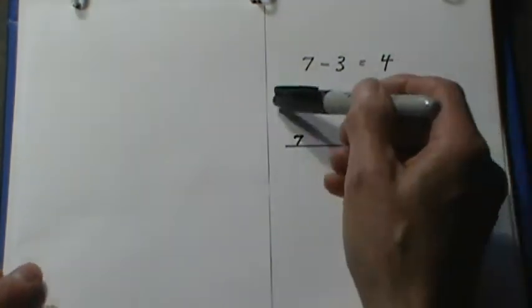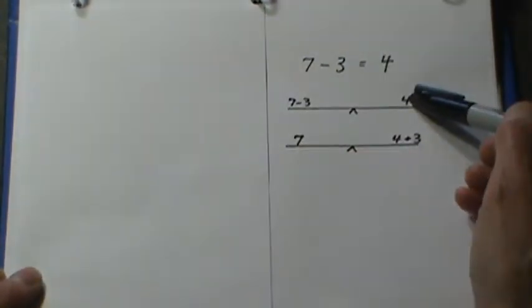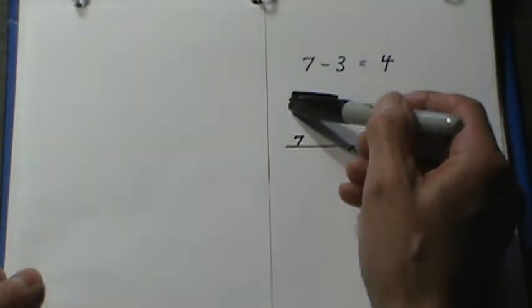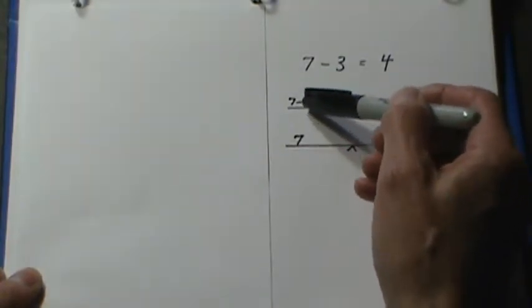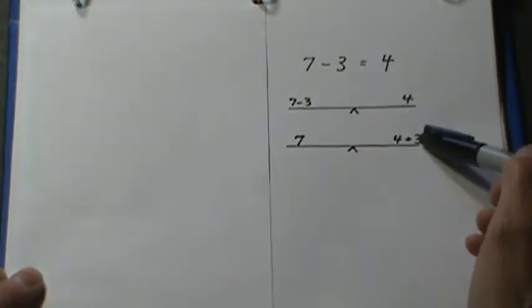Here's another example. The 7 minus 3 balances the 4. If I remove this term from the left side, I have to add 3 to the other side because I'm increasing both sides by 3.